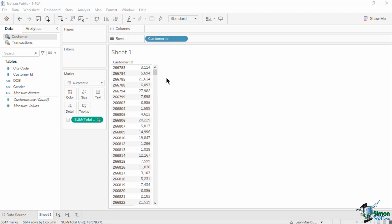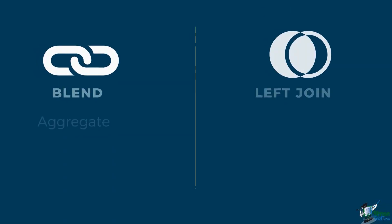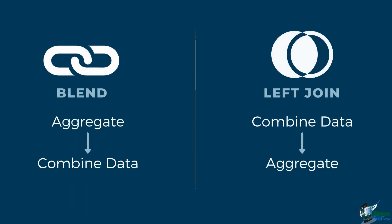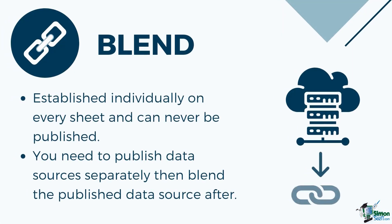This process is similar to that of a traditional left join, but the main difference is when aggregation is applied. A join combines the data first before applying an aggregation, while a blend will aggregate data first before combining the data. Blends are established individually on every sheet and can never be published, because there is no true blended data source — it simply blends results from multiple data sources in a visualization. Instead, you need to publish data sources separately, then blend the published data sources afterwards.